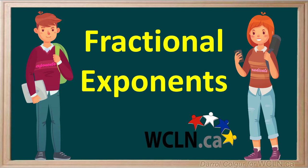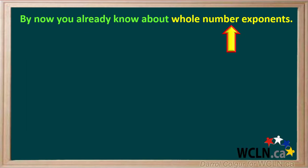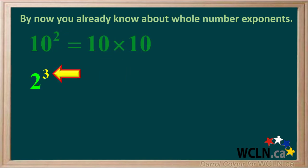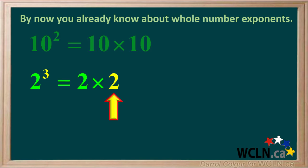Fractional exponents are where exponents and radicals meet. By now, you already know about whole number exponents and what they mean. For example, 10 with an exponent 2 is 10 to the power 2, or 10 times 10. 2 with an exponent 3, or 2 to the power 3, is 2 times 2 times 2.